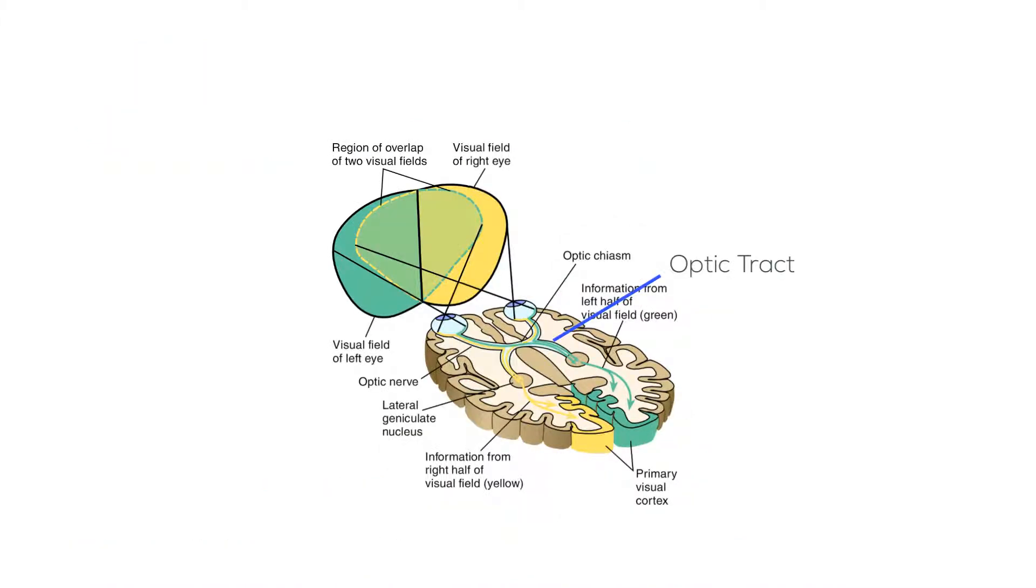Posterior to the chiasm, the optic tract travels to the lateral geniculate nucleus of the thalamus.